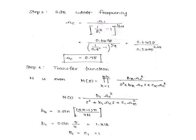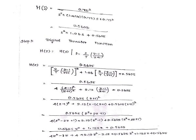Step 4: Transfer function. When N is even, we use the given formula. The value is H(s) = 0.75² / (s² + 1.414 × 0.75s + 0.75²). Then we are going to convert this analog transfer function H(s) into the digital transfer function H(z).